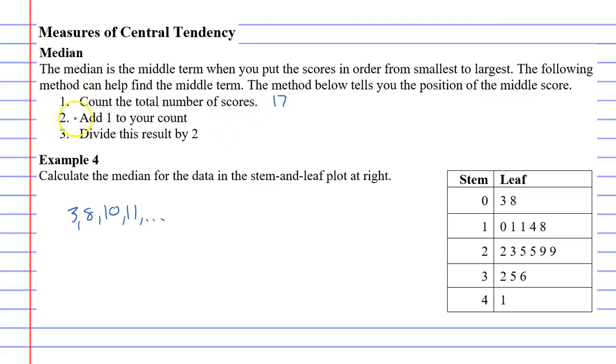And then step two says add one to your count, so 17 plus one is 18, and then divide this result by 2, 18 divide 2 is 9.